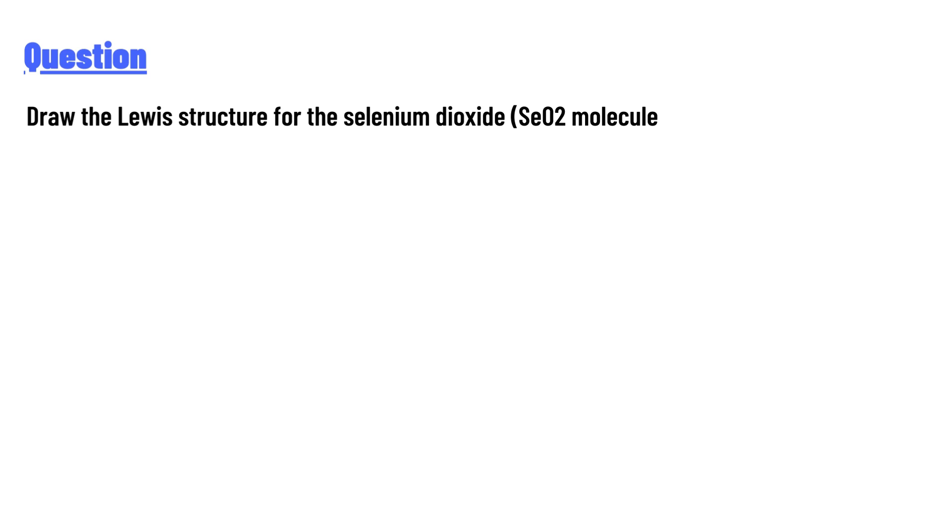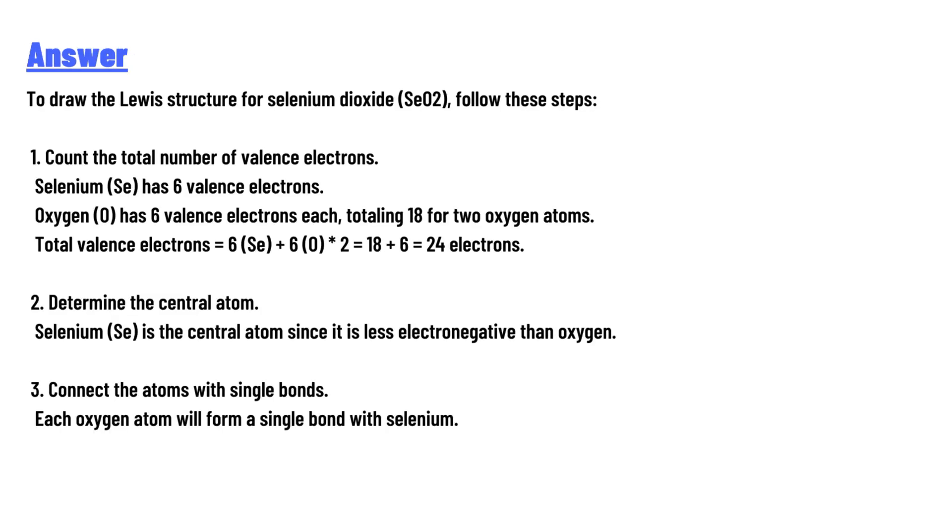Answer: To draw the Lewis structure for selenium dioxide SeO2, follow these steps. First, count the total number of valence electrons. Selenium has 6 valence electrons. Oxygen has 6 valence electrons each, totaling 18 for two oxygen atoms. Total valence electrons = 6(Se) + 6(O) × 2 = 18 + 6 = 24 electrons.